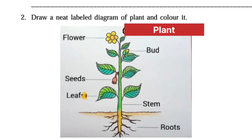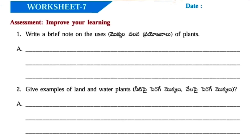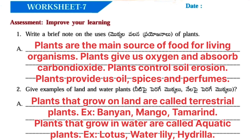Next, Worksheet number 7. Assessment: Improve your learning. First question: write a brief note on the uses of plants. Answer: Plants are the main source of food for living organisms. Plants give us oxygen and absorb carbon dioxide. Plants control soil erosion. Plants provide us oil, spices, and perfumes.